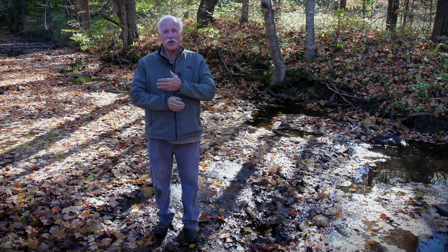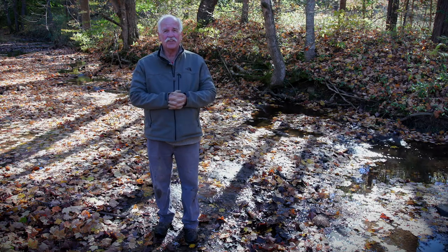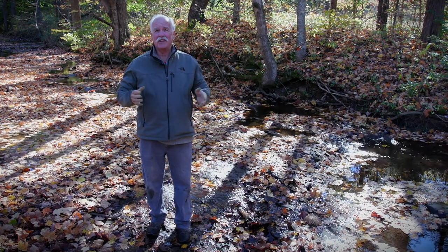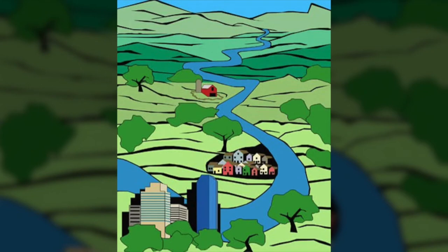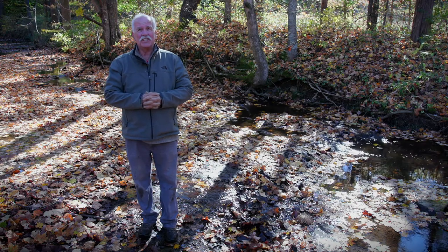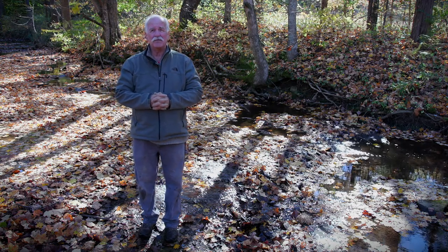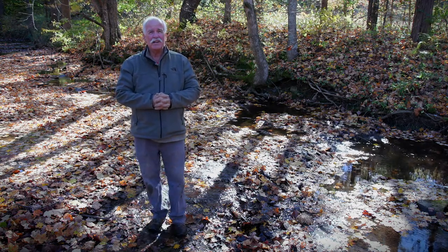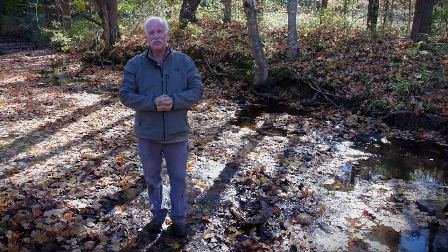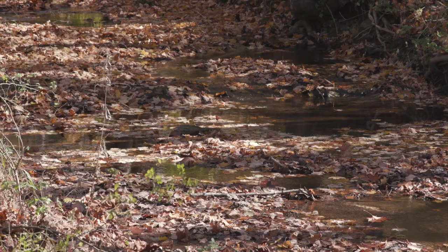A stream's water quality — the chemistry of it — will always reflect what's in the watershed. When we talk about a watershed, we're talking about that area of land where precipitation falls and drains to a single point on the stream. If as little as ten percent of that watershed has been developed — whether as a farm or roads and houses — we start seeing a degradation of water quality.